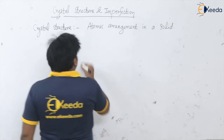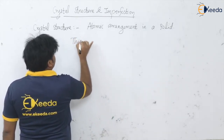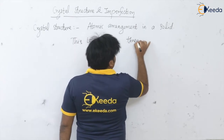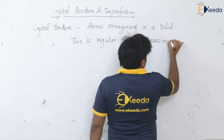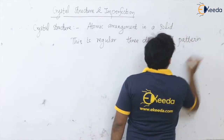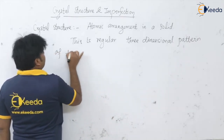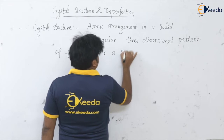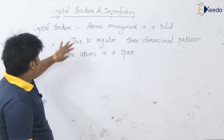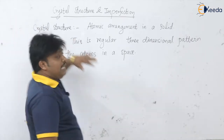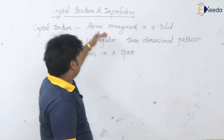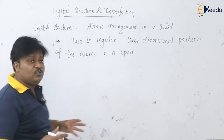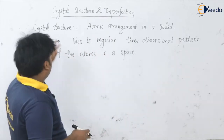Crystal structure is a regular three-dimensional pattern of atoms in space. With respect to the coordinate axes X, Y, Z, we can see how the atoms are arranged in this three-dimensional pattern using crystal structure.